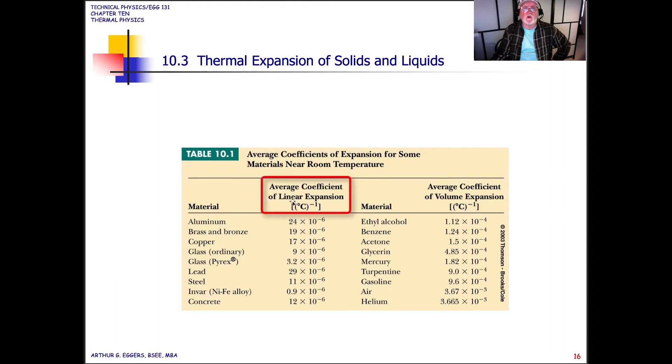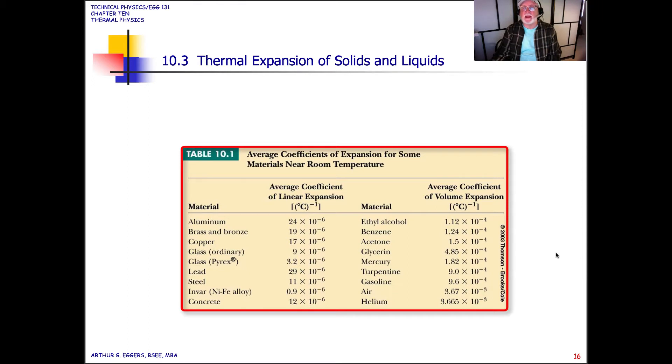And you can see for each one of them, they're rated in per degree Celsius. Remember the minus one means it's in the denominator, so per degree Celsius, the average coefficient of linear expansion. And it covers everything from aluminum to concrete to alcohol to mercury to air and to helium. So this is a table that you need to keep handy.